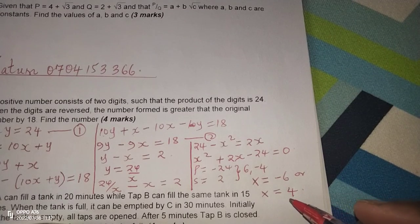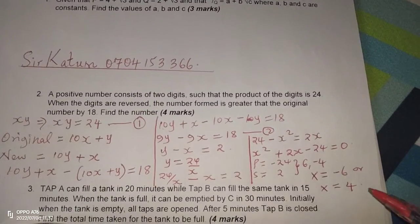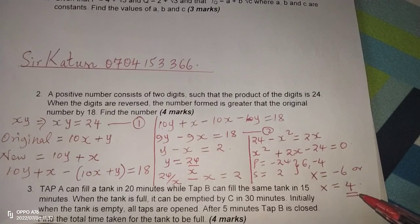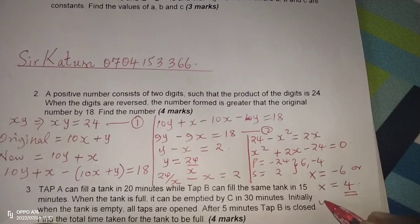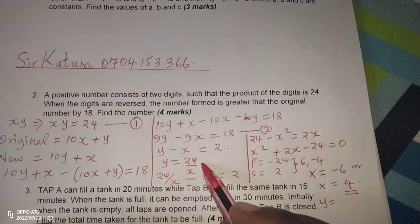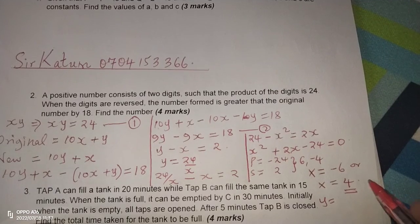And now that we are dealing with a positive number, then we are going to pick X as 4. And after picking X as 4, then we can get Y as 24 over X, which is going to be 24 over 4, which is 6.